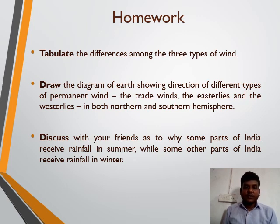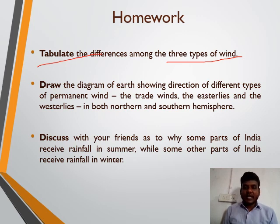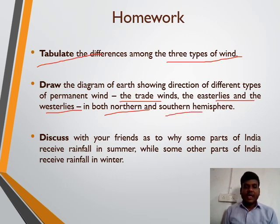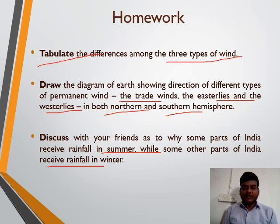This is the homework for you: write the questions in your notebooks and prepare a tabular form showing differences among the three types of wind. Draw a diagram of the Earth showing the direction of different types of permanent wind — trade wind, easterly wind, and westerly wind — in both the northern and southern hemispheres. Also discuss with your friends why some parts of India receive rainfall in summer while others receive it in winter, and write your responses in the notebook. We will check it in the next class. Thank you, take care, bye!